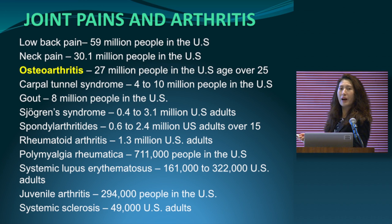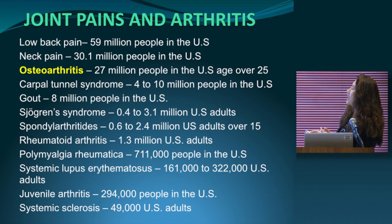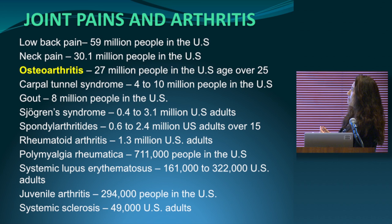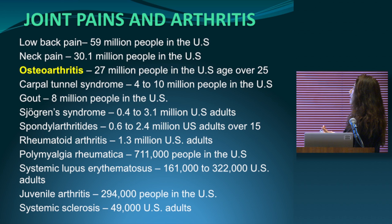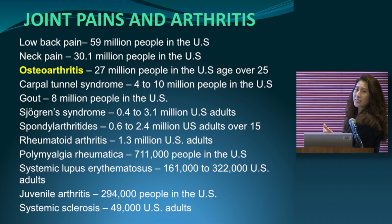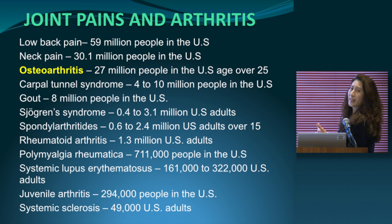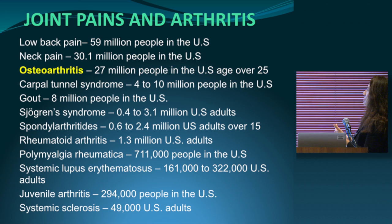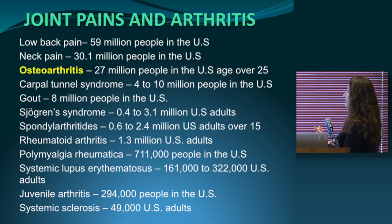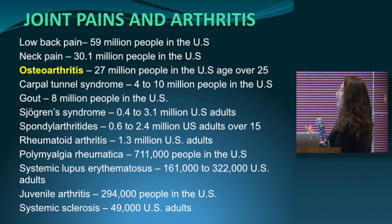Gout, which people have probably heard a lot about, is an inflammatory arthritis that gives lots of pain, affecting about 8 million people in the United States. Sjogren's, a form of autoimmune disease, affects about 0.4 to 3.1 million of the US population. Spondyloarthritis involves the spine and other joints, affecting up to 2.4 million. Rheumatoid arthritis affects about 1.3 million US adults, and juvenile rheumatoid arthritis about 300,000.